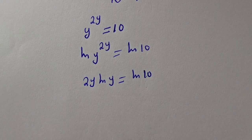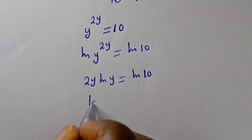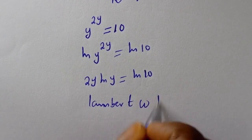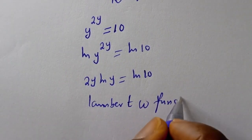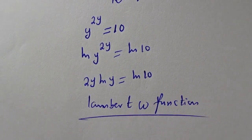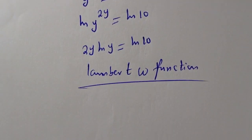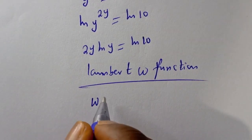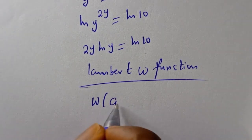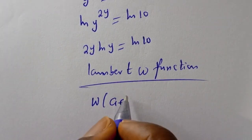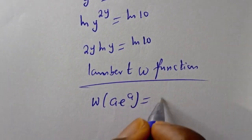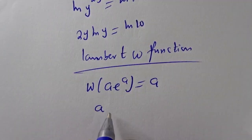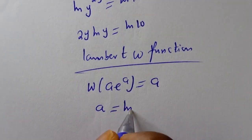From here we can introduce the Lambert W function. That is, W(a · e^a) is equal to a. From this equation, a is equal to natural log of y.